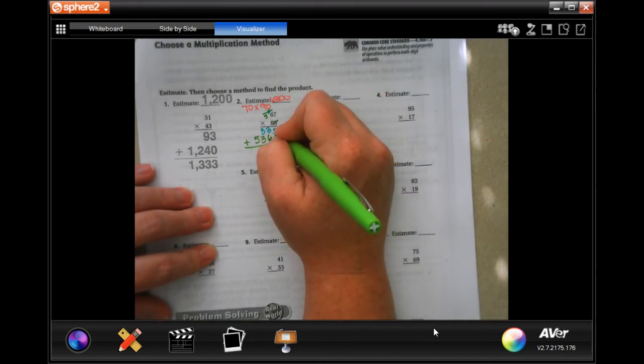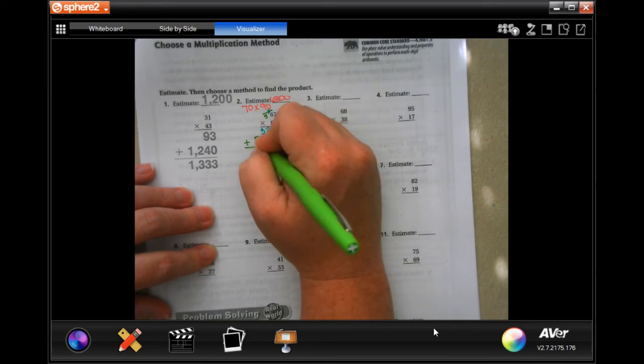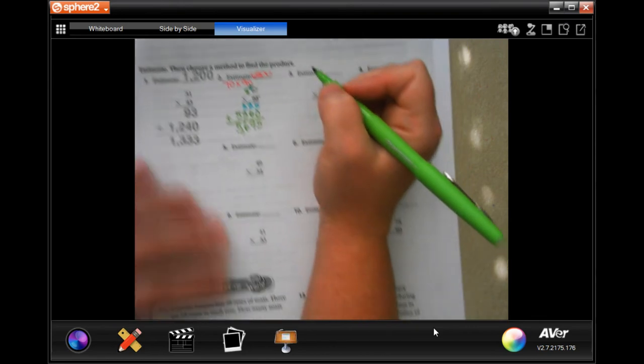Add that up. We're going to get five plus zero is five. Three plus six is nine. Three plus three is six, and bring down our five. 5,695.